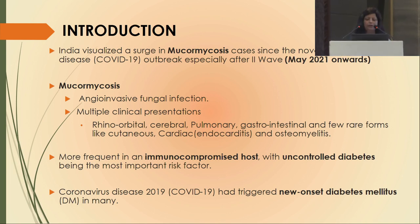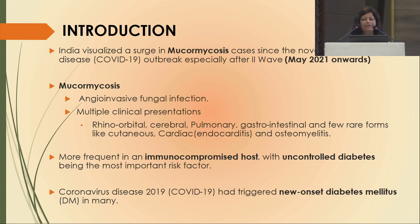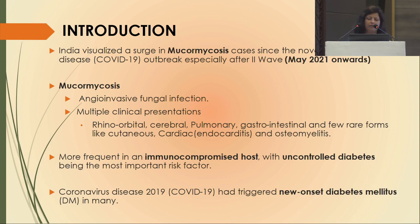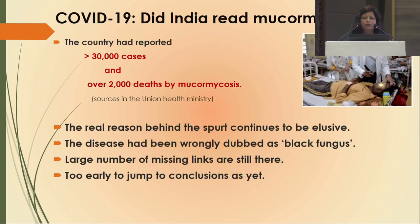Mucormycosis is an angio-invasive fungal infection with multiple clinical presentations — rhinoorbital cerebral, pulmonary, GIT, cutaneous, or cardiac involvement. It is more frequent in immunocompromised hosts, with uncontrolled diabetes being the most important risk factor. COVID-19 triggered new-onset diabetes mellitus in many previously non-diabetic patients. India reported more than 30,000 cases and over 2,000 deaths from mucormycosis, with the real reason behind the spurt still elusive.